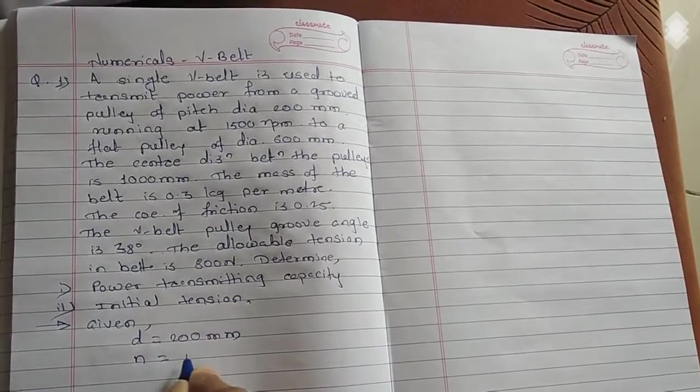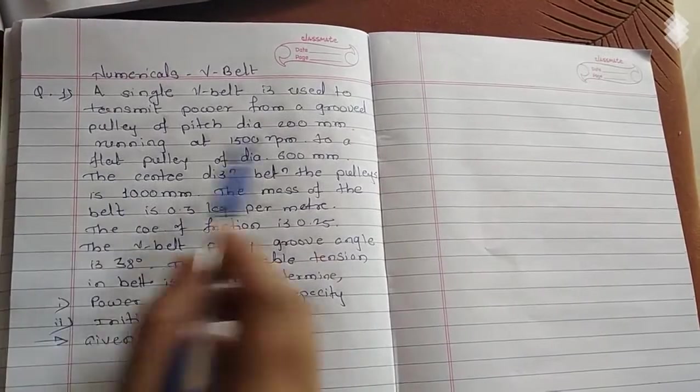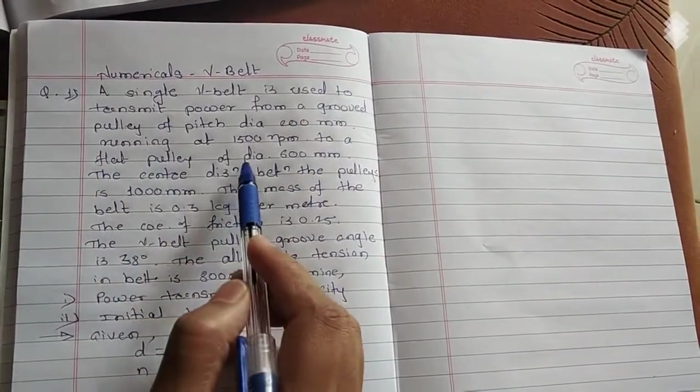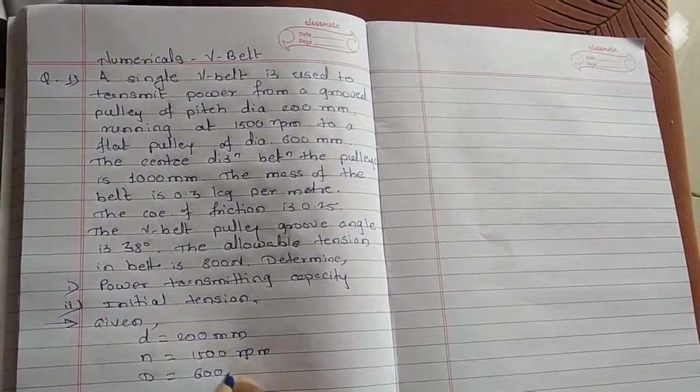Then to a flat pulley of diameter 600 mm, so capital D is 600 mm.